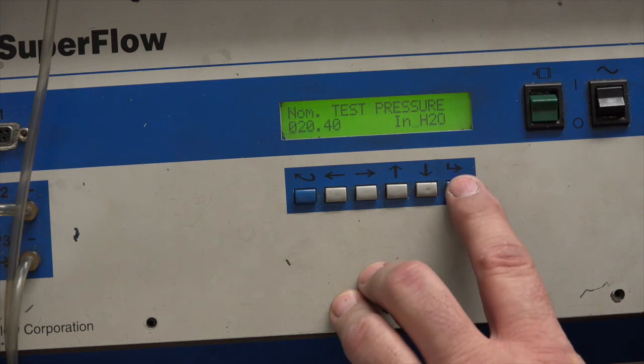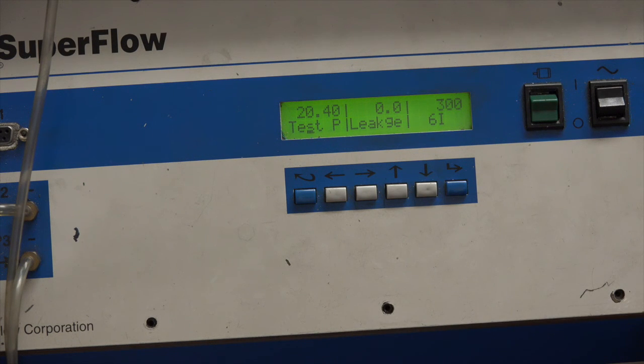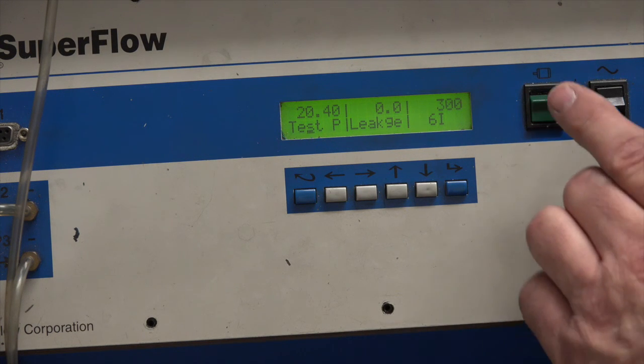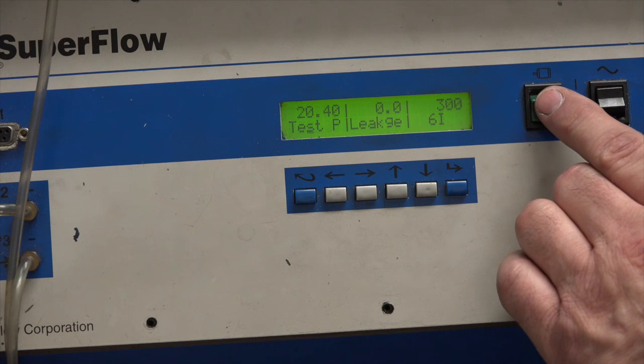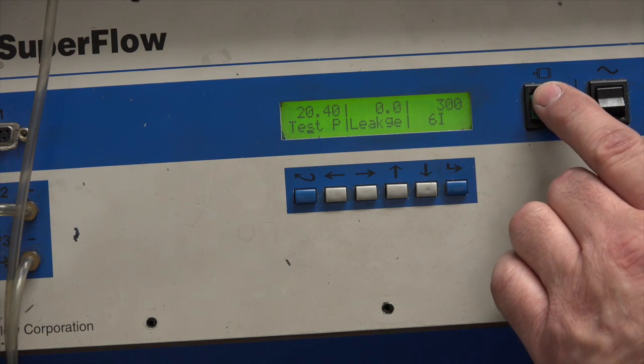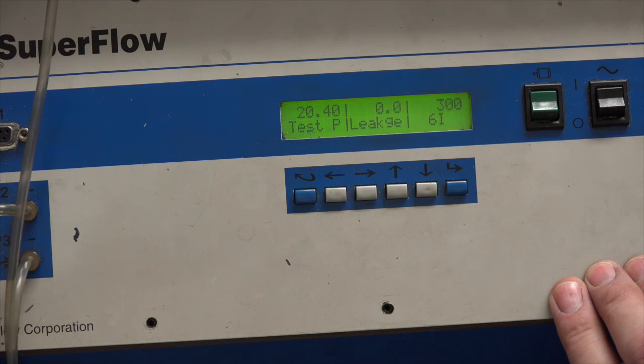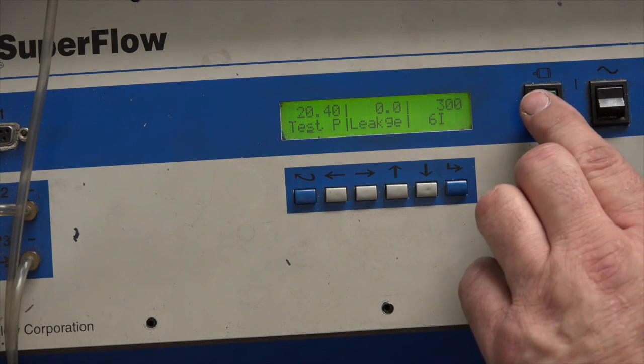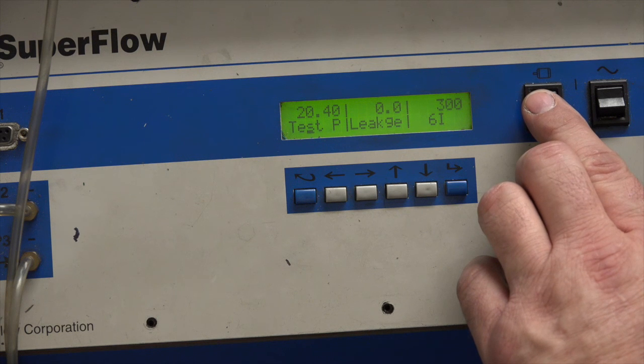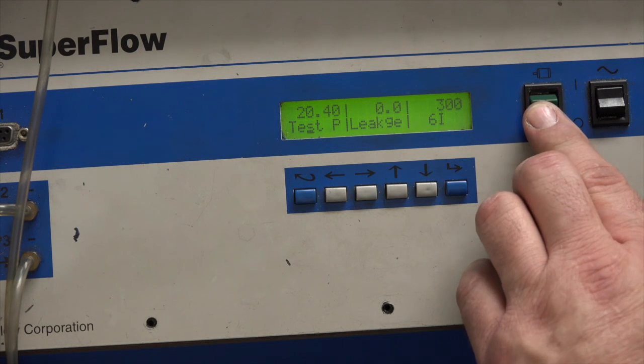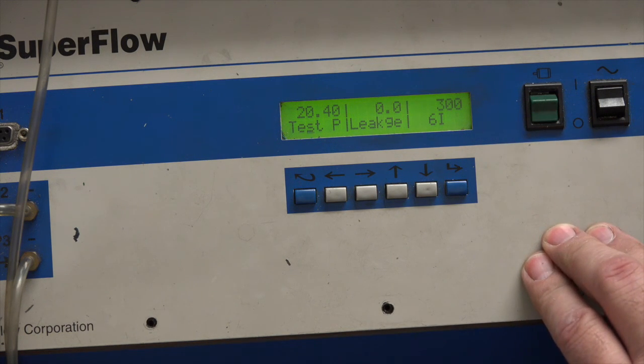You can see nominal, 20.4 inches, 6i. The 6 happens to be 300 CFM. And now we're going to turn on the motor. At this point, we have a lot of noise, and we have all kinds of sound going on here. Turn it off, we get the motor sticks again, and that will shut things down.